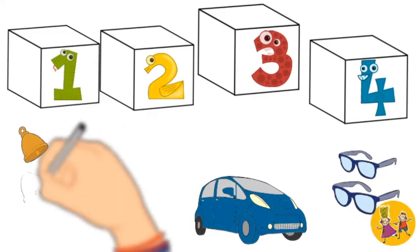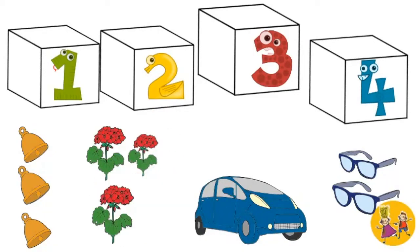Let's count how many of each thing we have and match it with the correct box. Let's count the bells. 1, 2, 3. 3 bells. We connect them with box number 3.